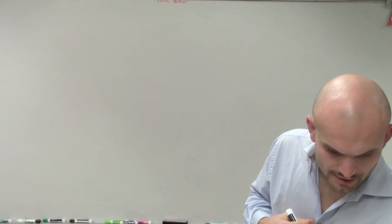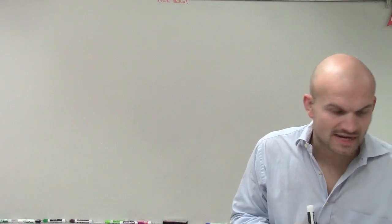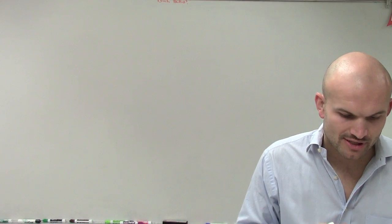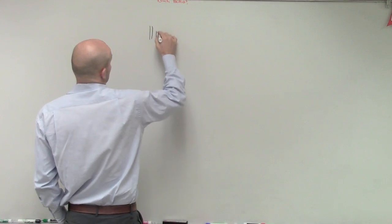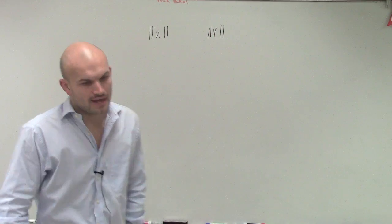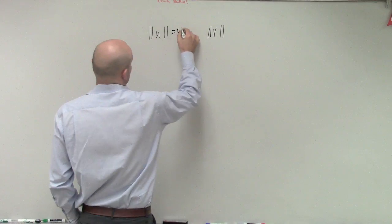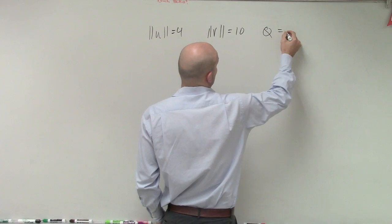For number 29, they ask us to find u dot v, the dot product of u and v, where theta is the angle between u and v. They give us the magnitude of u is 4, the magnitude of v is 10, and the angle is 5 pi over 3.